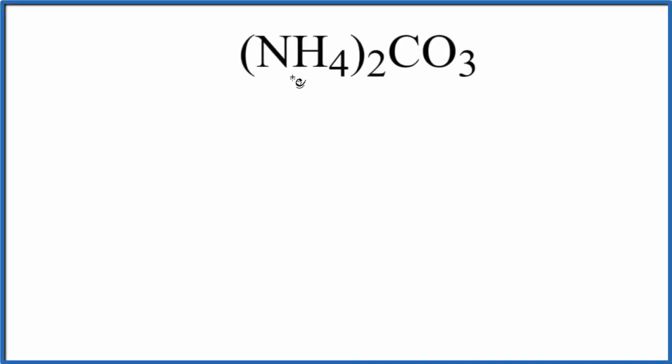In this video we'll find the number of atoms in (NH₄)₂CO₃, that's ammonium carbonate. So let's write the element symbols. First we have our nitrogen and our hydrogen, and then in our carbonate here we have a carbon and an oxygen atom.